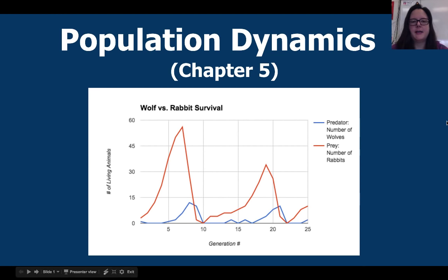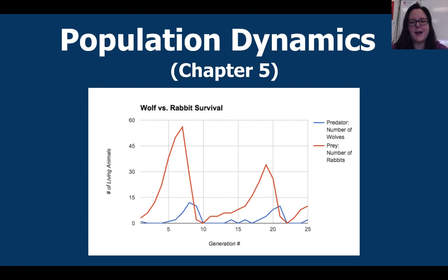Today you're going to be taking Cornell notes on population dynamics. This is chapter 5 in your textbook. Remember that when you take Cornell notes, you take notes on the right side of the line that you draw. On the left side you need to write questions that could be answered by what's in your notes, and then you need to have a summary at the end.